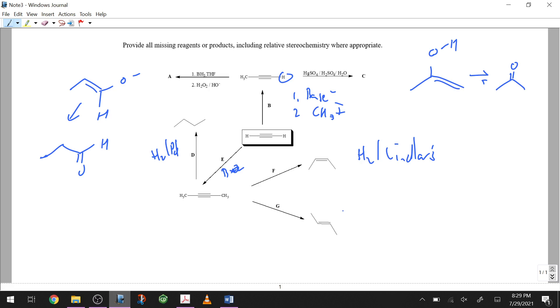Letter G, we're doing the anti addition of hydrogen. That is a dissolving metal reduction, so that is either sodium and ammonia or lithium and ammonia.